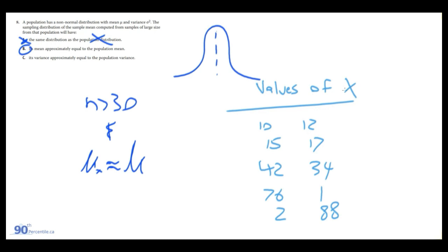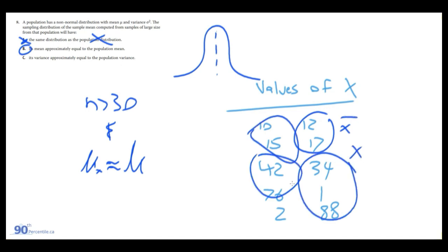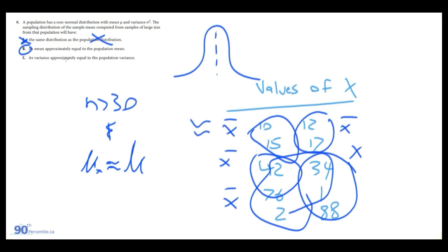The more samples I take, the more likely the distribution of the calculated mean will be equal to or close to the population mean. So B is correct. For C, the central limit theorem doesn't have anything to do with the variance — we don't necessarily know what the population variance is, so C is incorrect. The answer is just B: the mean is approximately equal to the population mean as sample size increases.